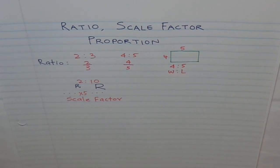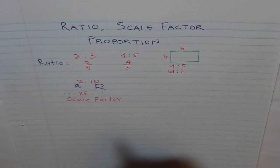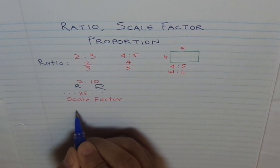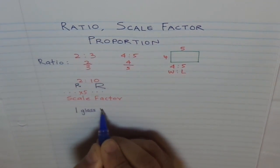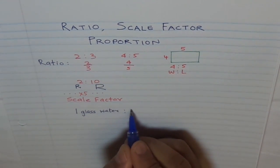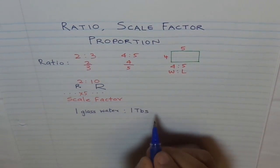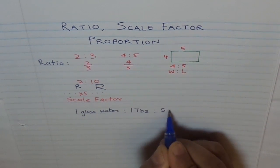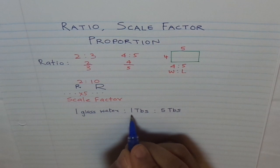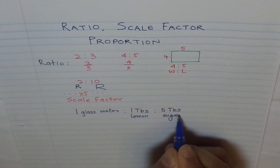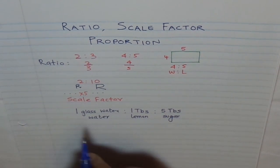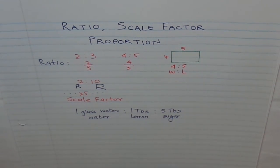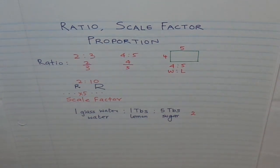The number by which we multiply a ratio is called the scale factor. For example, let's say we have a recipe for lemonade. In one glass of water, we add 1 tablespoon of lemon and 5 tablespoons of sugar. This serves 2 people. Now if we have to make this recipe for 10 people, we multiply everything by 5.